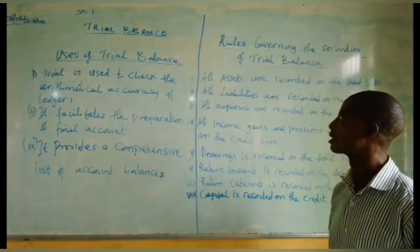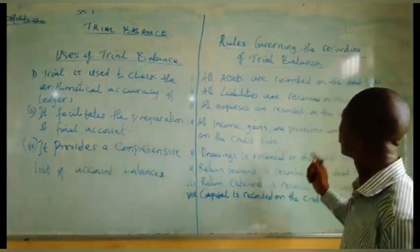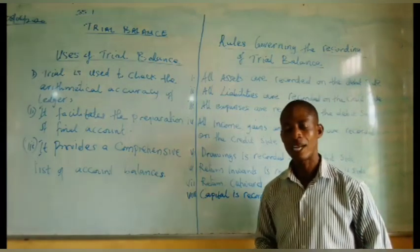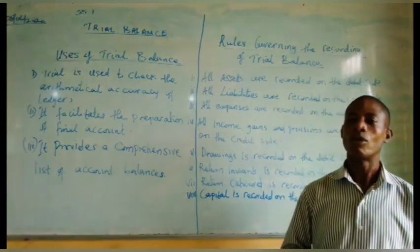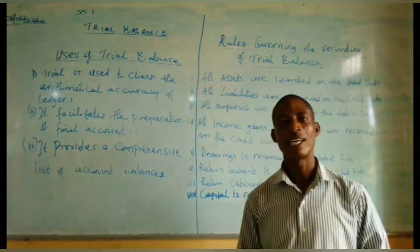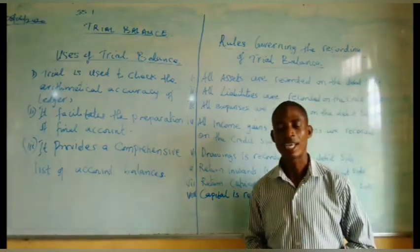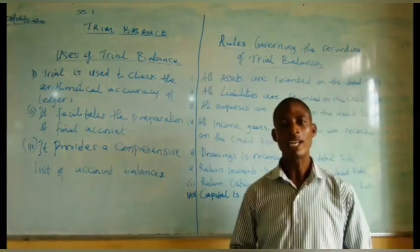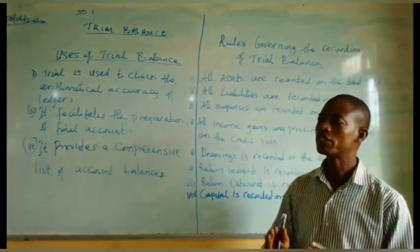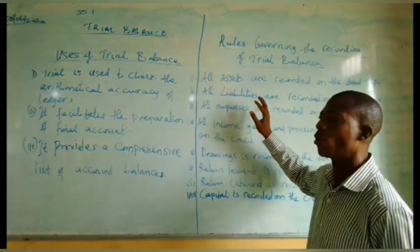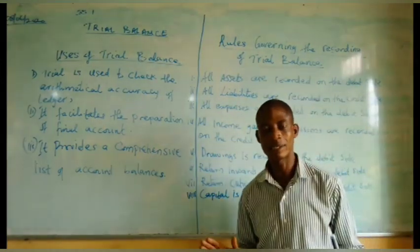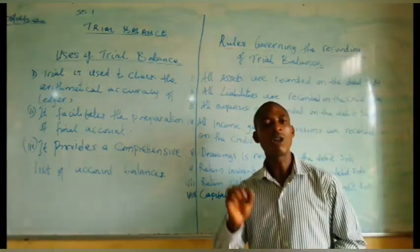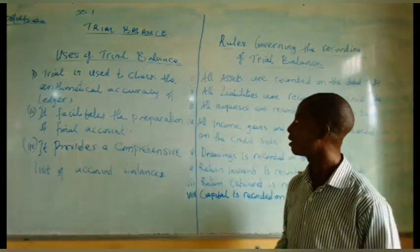Rule one: all assets are recorded on the debit side of the trial balance. If you are able to identify a particular item as an asset — whether fixed assets or current assets — the value of that asset must be recorded on the debit side of the trial balance.